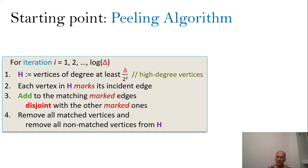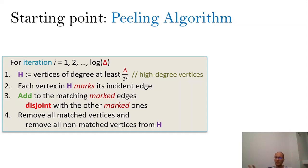The high-level idea of the peeling algorithm is to take care of vertices starting with the highest degrees and then looking at smaller degrees, level by level. First you start by trying to take care of vertices with degree between Δ/2 and Δ. One can show that there is always some matching — not necessarily maximum or maximal — but some matching in the graph that covers a constant fraction of these high-degree vertices. The idea is to find one such matching, add it as part of the algorithm, and remove all high-degree vertices. After this step, the maximum degree of the remaining graph becomes at most Δ/2.